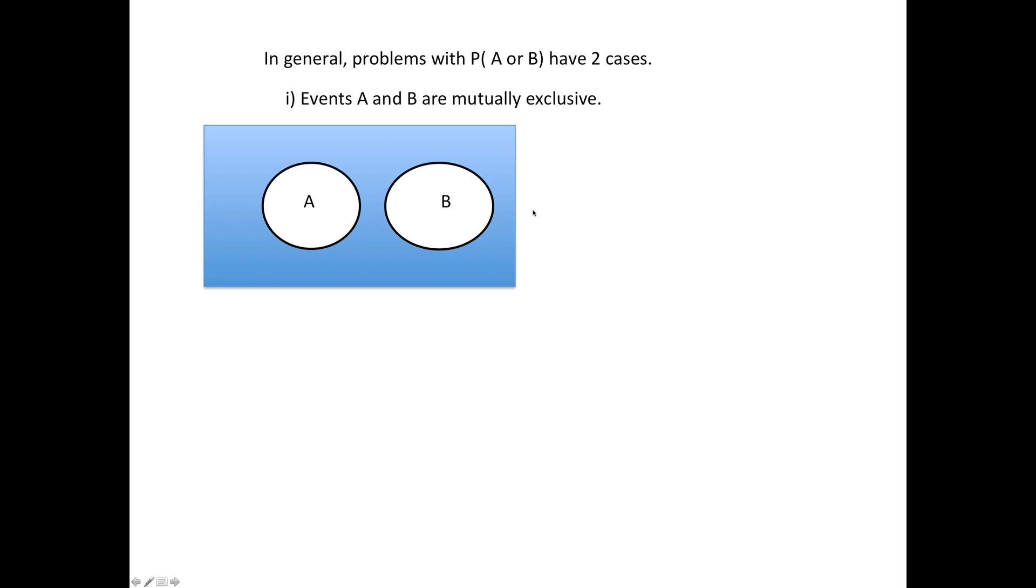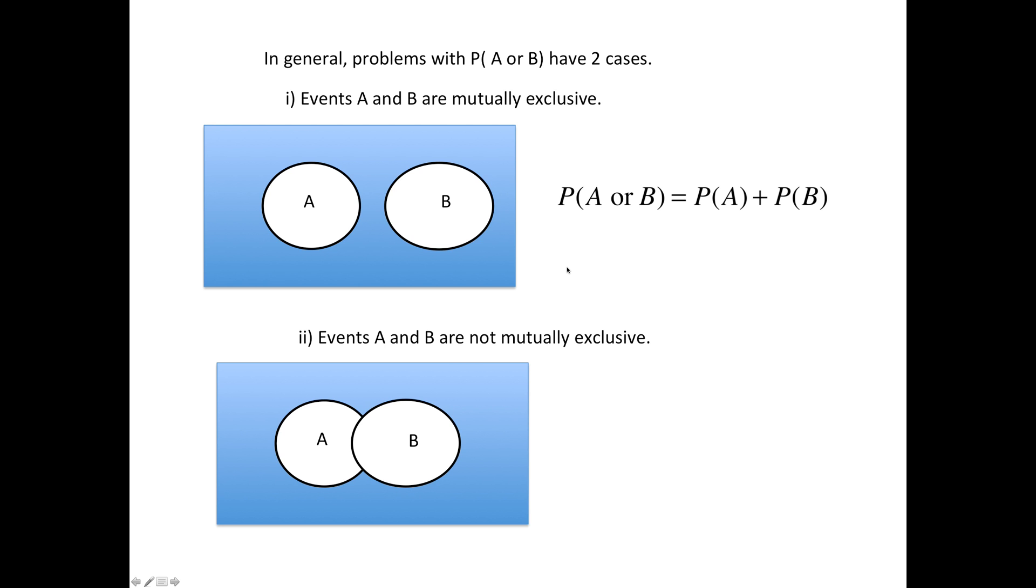You just do the probability for each one; the 'or' turns to addition. If they're not mutually exclusive, there is the chance for overlap, like with the Queens and the red cards. Then you do add the two fractions together—probability of A and probability of B—but then those that were both A's and B's, this overlap, they got double counted, so you need to subtract that part.